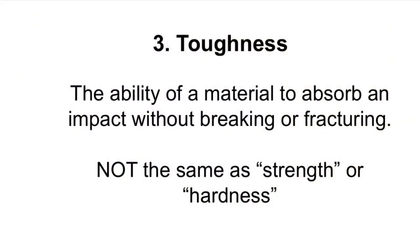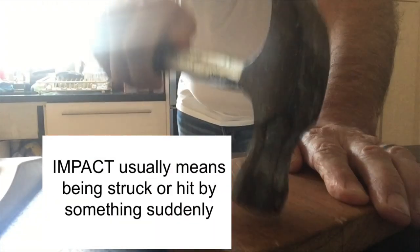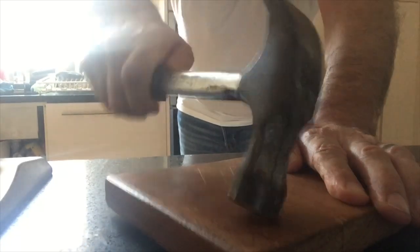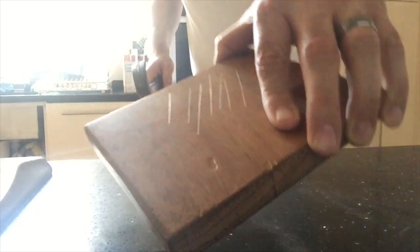Property number three is toughness — the ability of a material to absorb an impact without breaking or fracturing. This is not the same as strength and hardness. Toughness means something can absorb an impact without breaking; impact is hitting something suddenly. People often get toughness mixed up with hardness. Hardness is about the surface and whether it can withstand dents and scratches. The wood isn't particularly hard because there's a big dent from the hammer, but the wood is actually quite tough because although I hit it really hard, the whole object didn't break.